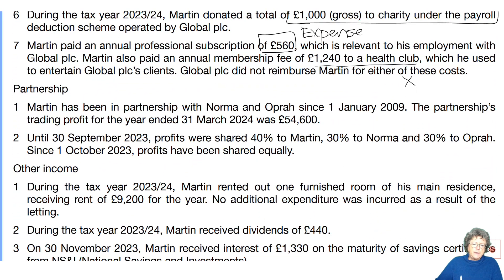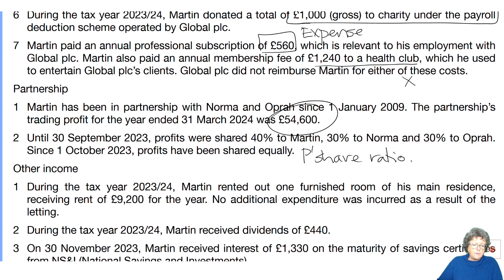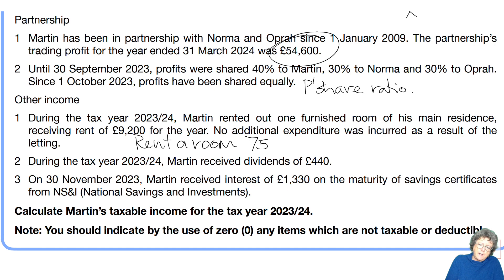For the partnership: he's been in partnership with Norma and Oprah since 2009 — it's an ongoing business. The partnership trade profits for the year ended March — this is the size of the bucket. Until September it was shared 40% for him, 30% for her, and 30% for Oprah. Since October that's been shared equally. So you're going to have to do a profit sharing ratio. He also had rent-a-room income, and the first £7,500 is exempt, so he only pays tax on the balance.